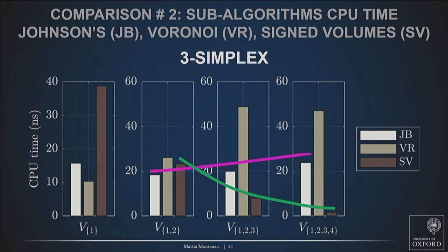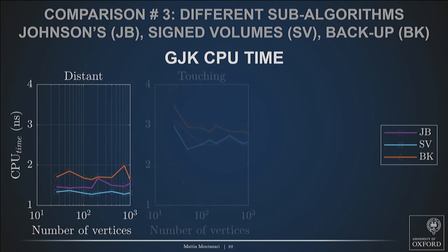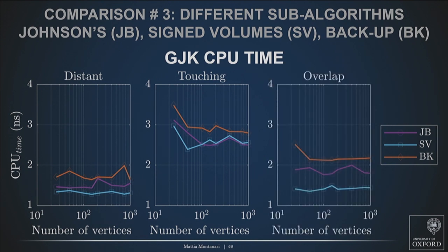Now, what we wanted to do is put these algorithms into GJK and see what happens in terms of computing time. I ran an experiment with two distant spheres. On top of Johnson and sign-volume, I also compared the backup procedure — another sub-algorithm which is very robust but very slow — and indeed backup procedure is the slowest. Sign-volume performs slightly faster than Johnson. If you move the two objects very close to each other, there isn't much difference. But when the two objects overlap, because of the different logic — bottom-up versus top-down — with the sign-volume algorithm you can save about 25% per GJK call.